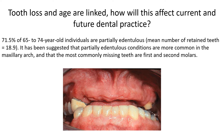Tooth loss and age are linked — how will this affect current and future dental practice? 71.5% of 65 to 74-year-old individuals are partially edentulous, with a mean number of retained teeth of 18.9. Partially edentulous conditions are more common in the maxillary arch, and the most commonly missing teeth are first and second molars.